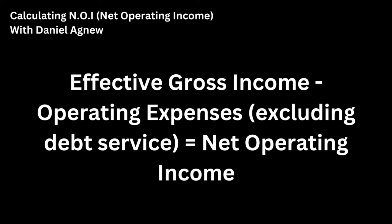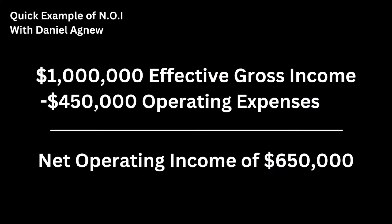So you'll take your effective gross income, subtract your operating expenses, and you'll be left with your net operating income. A quick example to visualize: if I had a property with an effective gross income of a million dollars and all operating expenses, excluding debt service, added up to $450,000, your net operating income would be $650,000.